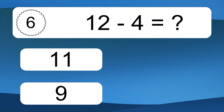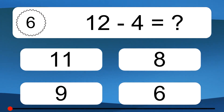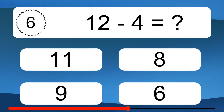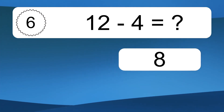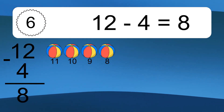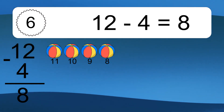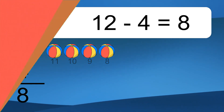12 minus 4 equals what? 12 minus 4 equals 8. Let's count it: 11, 10, 9, 8.